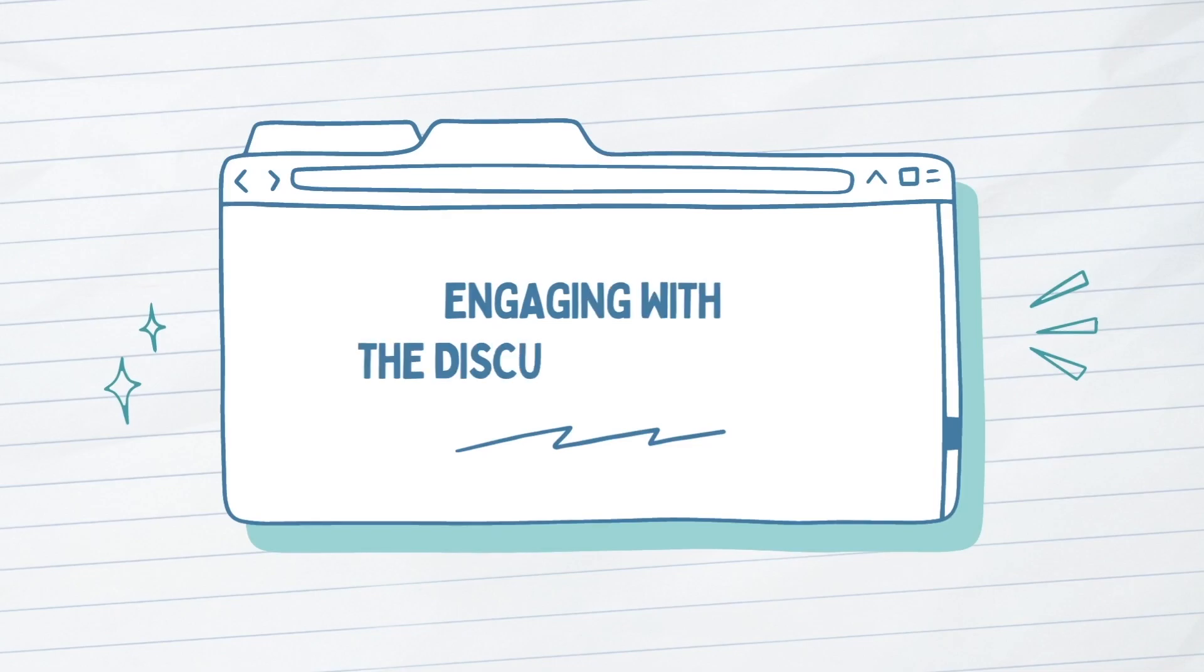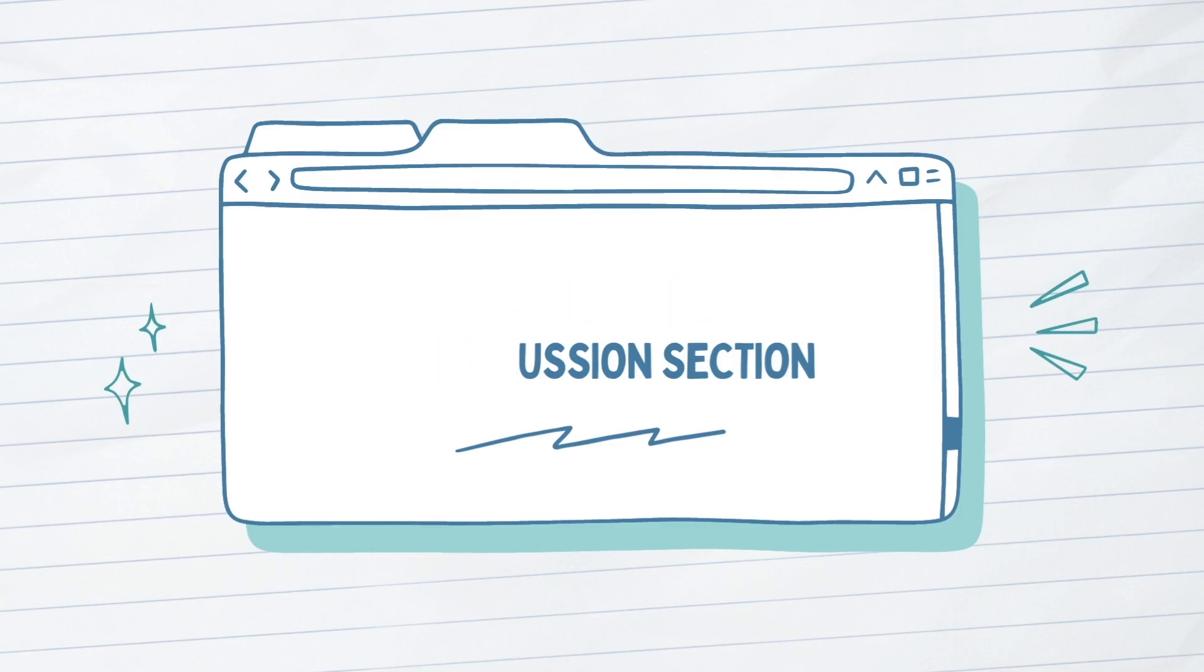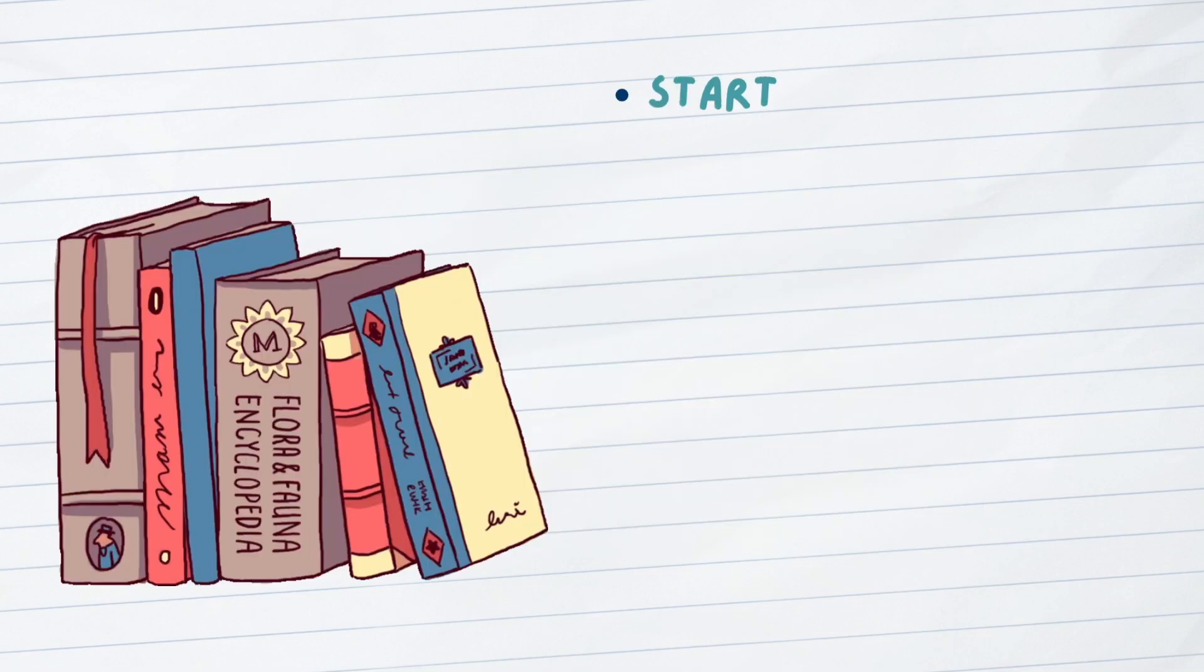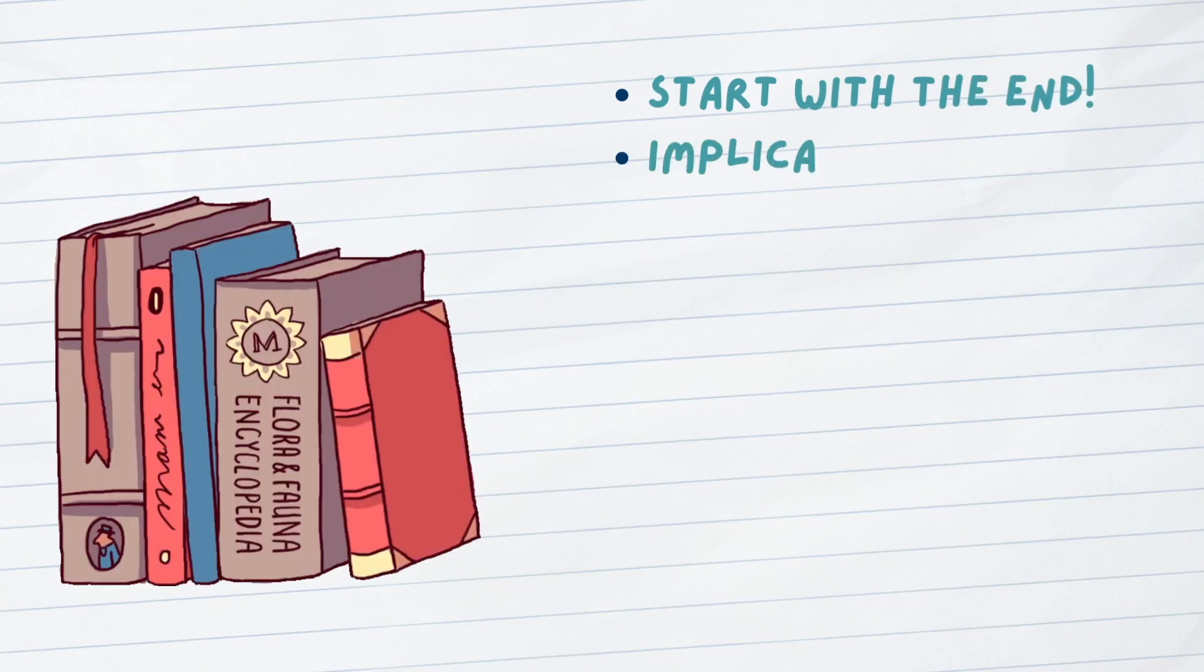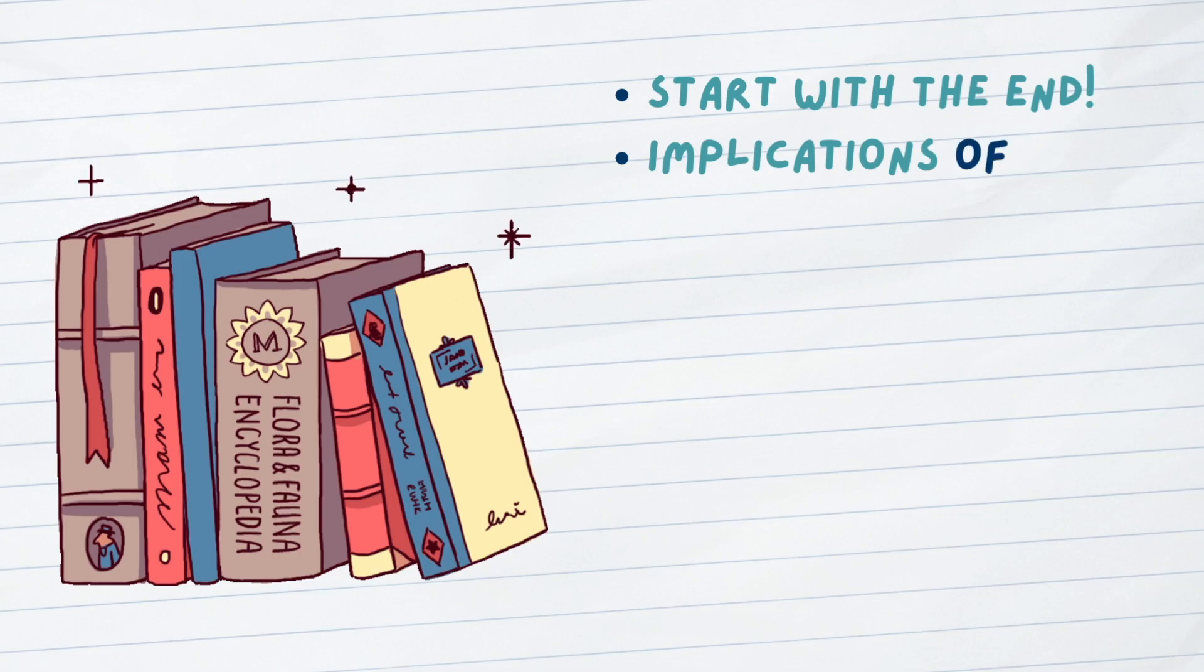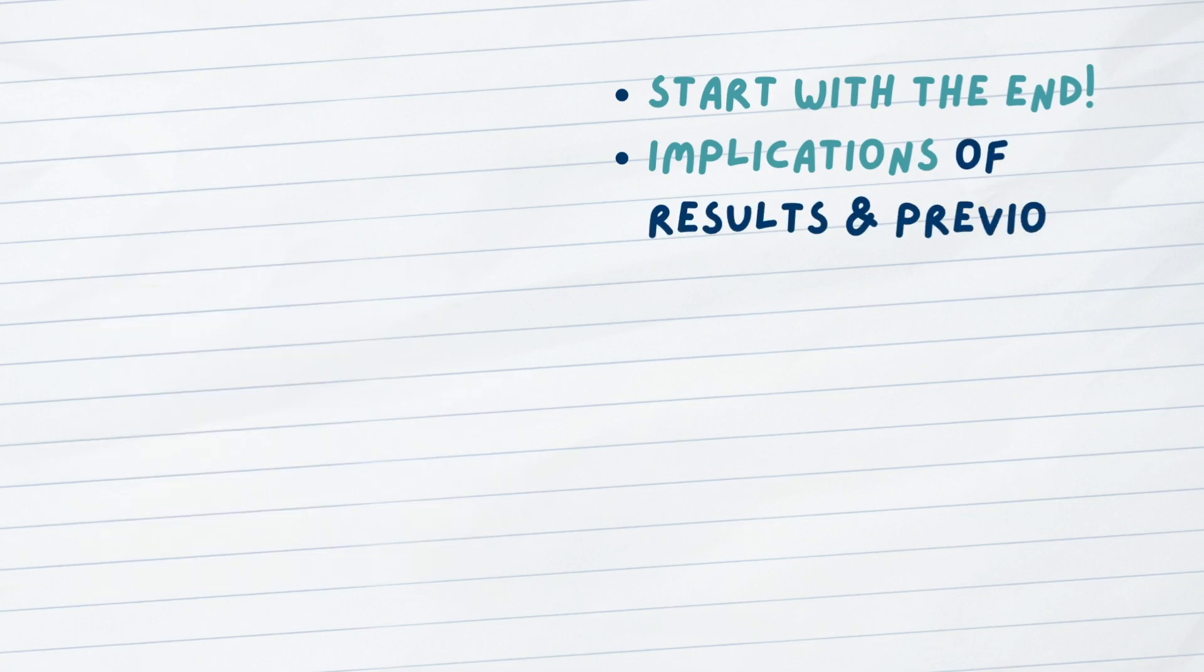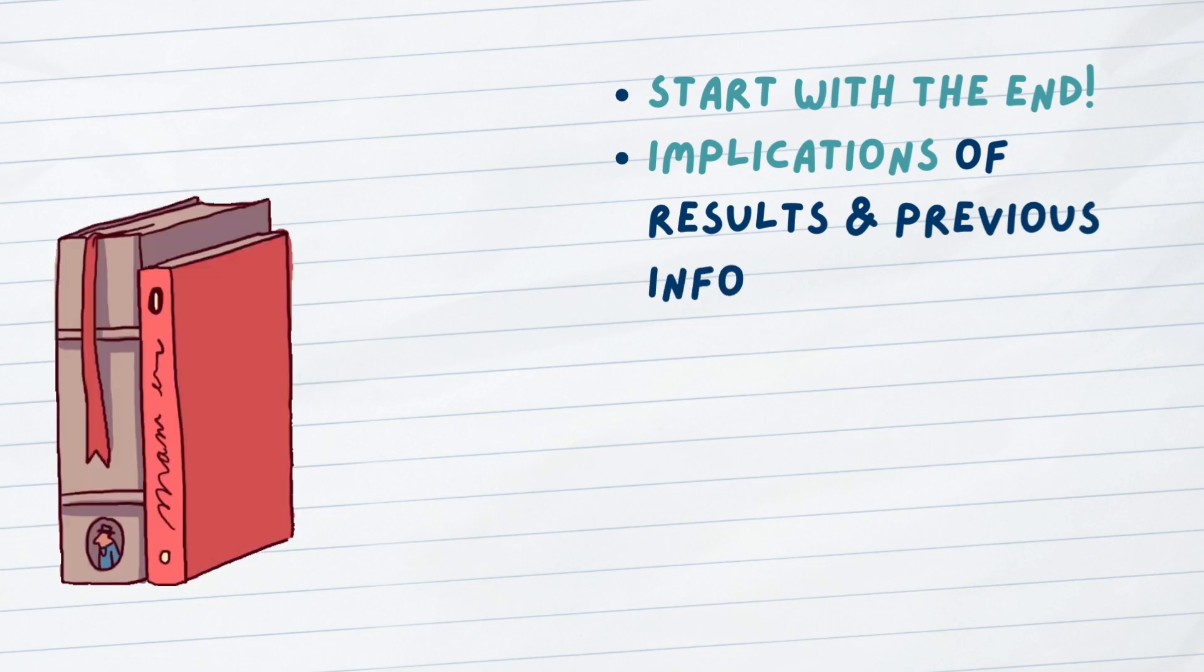After you answer any lingering questions you may have from the abstract through a quick purview of the respective section, move on to the discussion or conclusion section of the paper. This is where you should take the most detailed notes and spend time understanding what the researchers were trying to do with their paper. It may seem unusual to start with the end of the paper when trying to get a deeper understanding of the work, but it's important to remember that the conclusion is where the actual implications of a study are discussed.